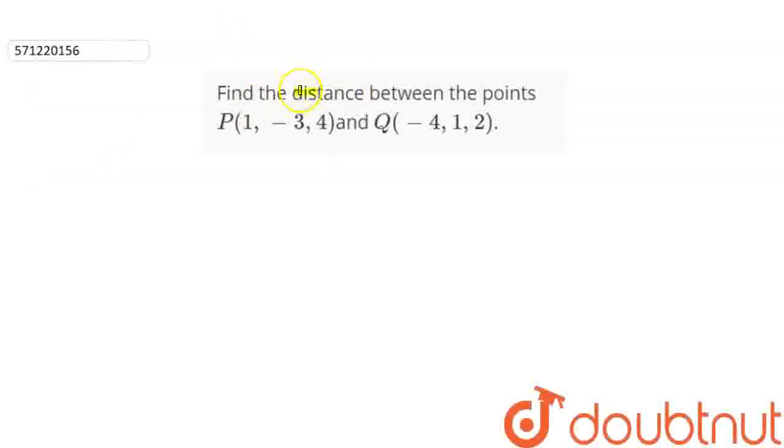Our question is to find the distance between the points P, whose coordinates are 1, minus 3, 4, and Q, whose coordinates are minus 4, 1, 2. So, if this is our line, and this is the coordinate P, this is coordinate Q. This is given to be minus 4, 1, 2, and this is given to be 1, minus 3, 4.